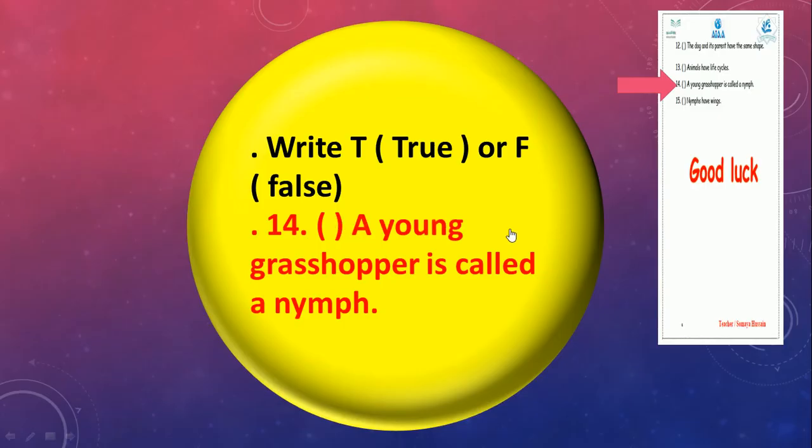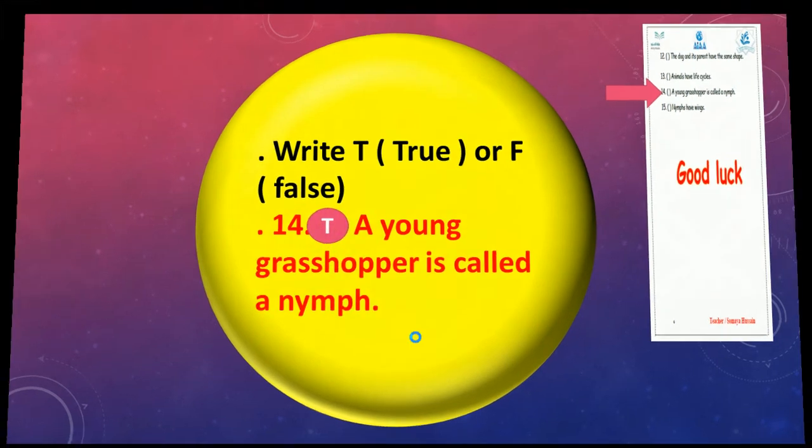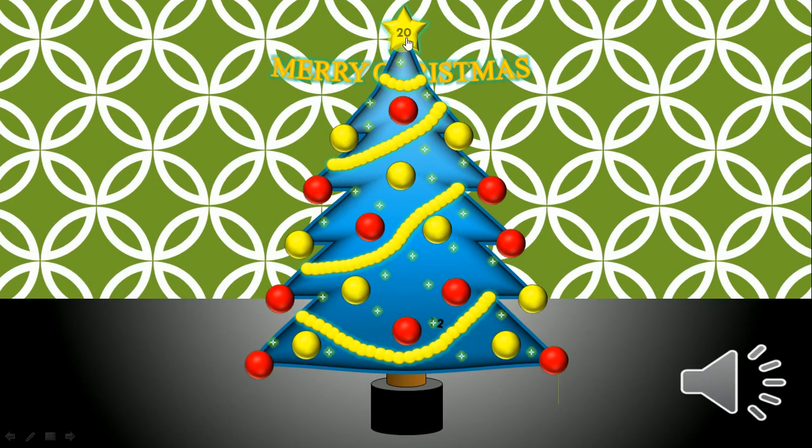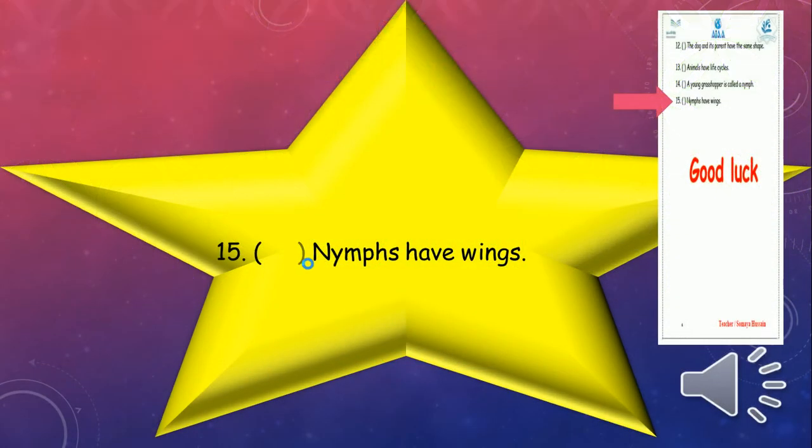Number twelve: A young grasshopper is called a nymph. Do you remember with me? Baby grasshopper, we called them nymph. Super, so we're gonna write T.